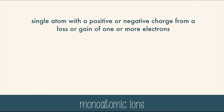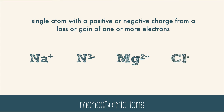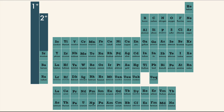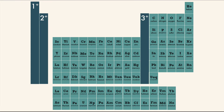Here are some examples of monoatomic ions. There's actually a really easy way to figure out the ions that form from the representative elements — you just use the periodic table. Elements in column 1 become +1 cations, column 2 become +2 cations, and column 13 become +3 cations.